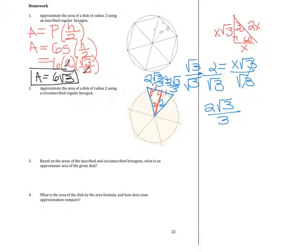I have 6 sides I need to write as the perimeter. So that's 6 times 4 radical 3 all over 3 times the height of 2 divided by 2.